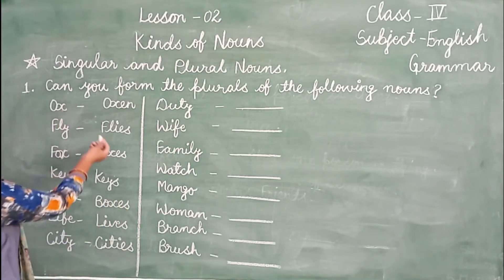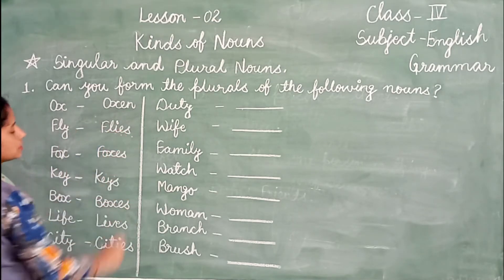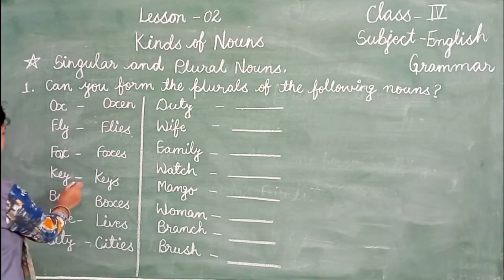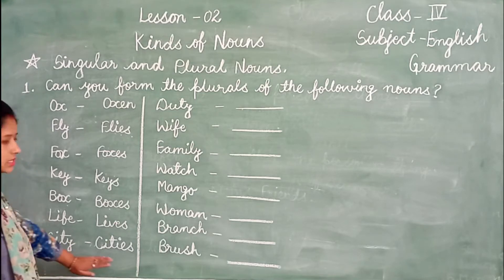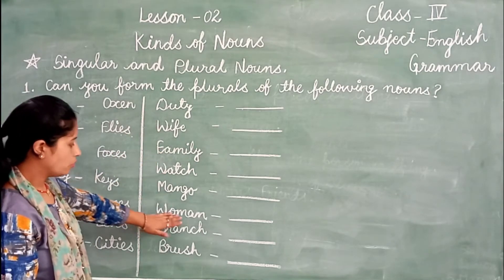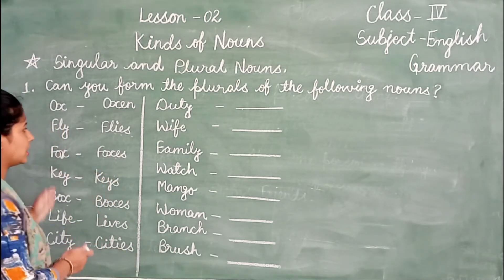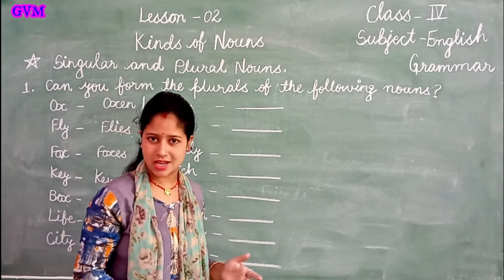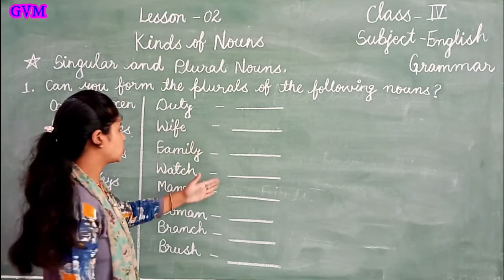For example: fly → flies (adding -i-e-s); fox → foxes; key, box, life, city → cities; duty, wife, watch, brush — these follow different plural rules such as adding -s, -es, or -ies.